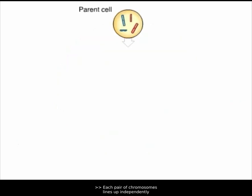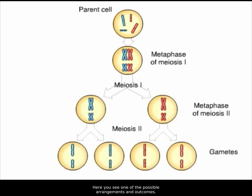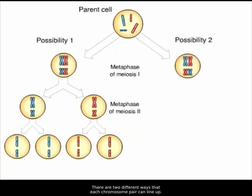Each pair of chromosomes lines up independently of the other pairs in metaphase I of meiosis. Here you see one of the possible arrangements and outcomes. There are two different ways that each chromosome pair can line up.